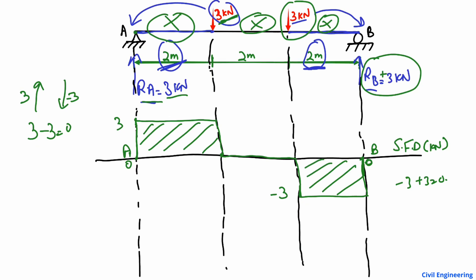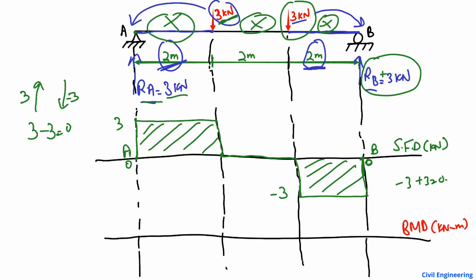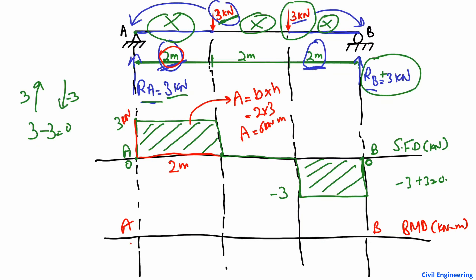To draw the bending moment diagram, we draw a new reference line. The bending moment has units of kN·m. The bending moment values are found by calculating the area of the shear force diagram. The left rectangle has a width of 2 m and a height of 3 kN, giving an area of 2 × 3 = 6 kN·m.